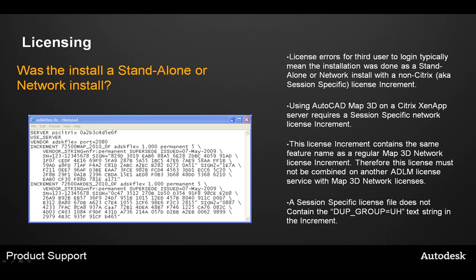Another common problem is installing Map 3D as standalone or using a regular network license file. If this is done, you will generally get an error message saying that the third user cannot obtain a license. Using AutoCAD Map 3D or Raster Design in Citrix ZenApp requires a special session-specific network license. This network license does not contain the DUP_GROUP=UH text string in the increment, which allows more than two users to use the application. In this sample file we can see there are five seats for each of AutoCAD Map 3D 2010 and AutoCAD Raster Design 2010. These feature codes are the same as regular network licensing, so you will need a separate service for your Citrix licenses.